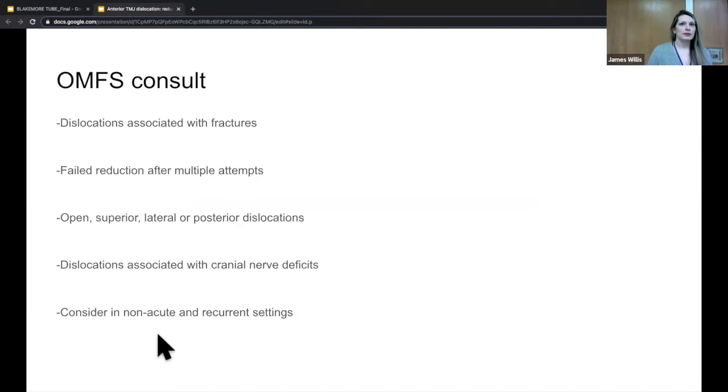When to call OMFS for help: anytime there's a complication associated with the dislocation, meaning there's an associated fracture. If you've failed at reducing after multiple attempts, if there's associated cranial nerve deficits, if it's not just an anterior dislocation but superior, posterior, or lateral, because there's usually other fractures associated with it. You can consider it in patients who have recurrent dislocations or it's a chronic dislocation, generally because these patients benefit more from surgery than from just manual reduction. What would OMFS do for these patients? They may reduce under general anesthesia, inject botulinum toxin into the muscles. I've read they also can inject blood within the TMJ space to induce scarring and fibrosis to prevent the condyle from moving. They can even perform surgery and alter the articular eminence to prevent the condyle from becoming locked into place.